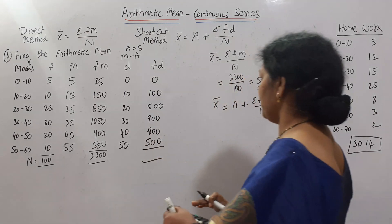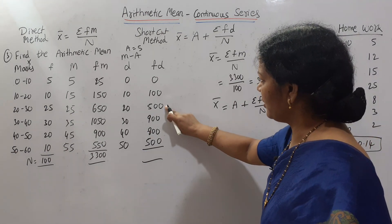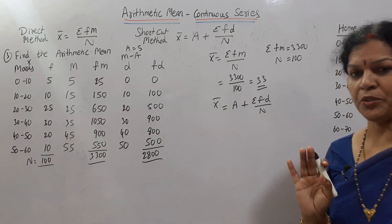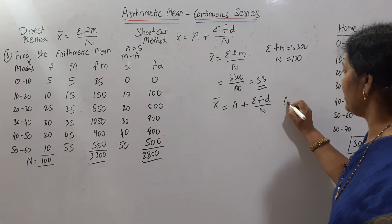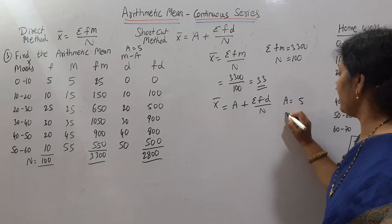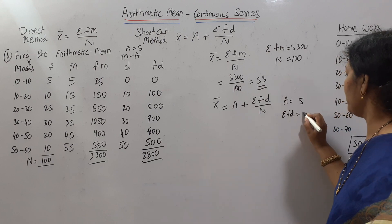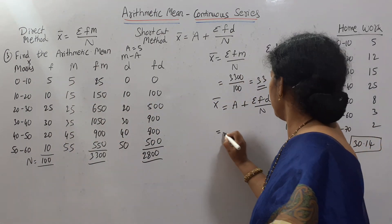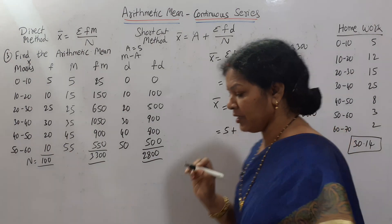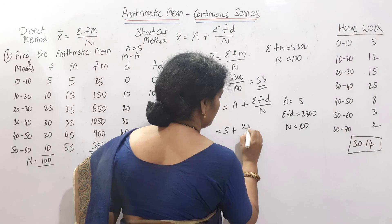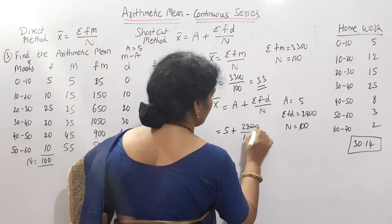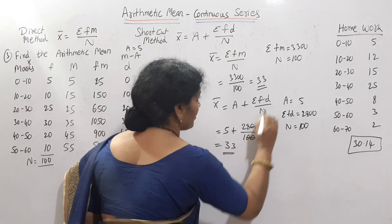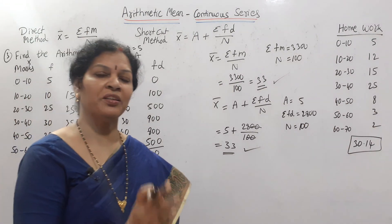Totaling f × d gives σfd = 2800. Apply in the formula: A + σfd / n = 5 + 2800 / 100 = 5 + 28 = 33. X̄ = 33. Whether you follow the direct method or the shortcut method, the answer will be the same — 33.